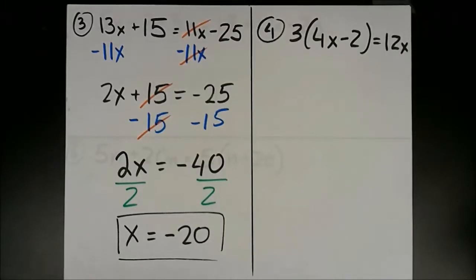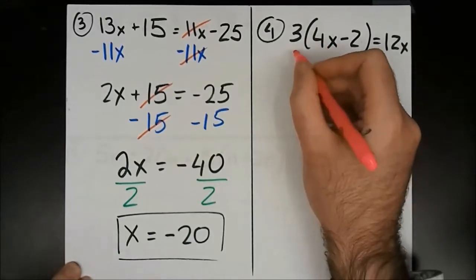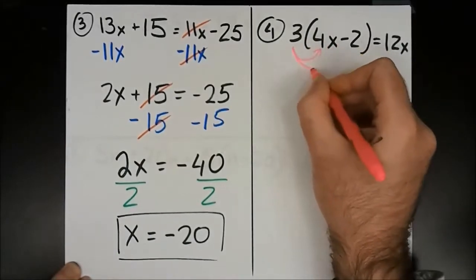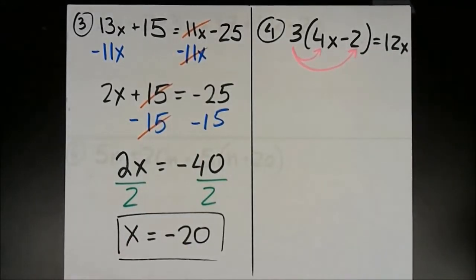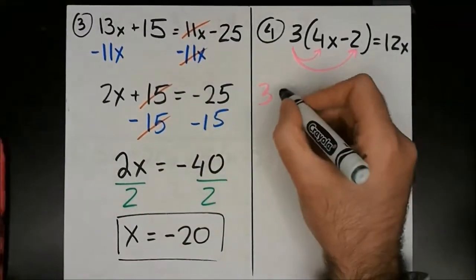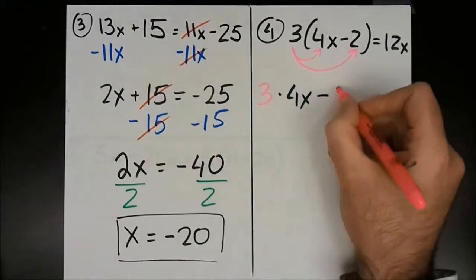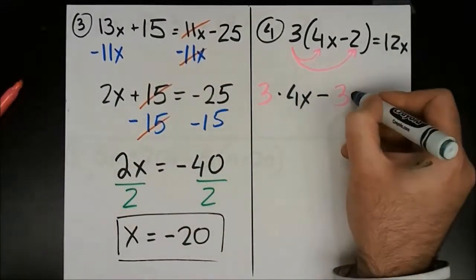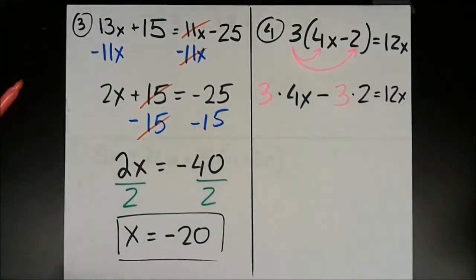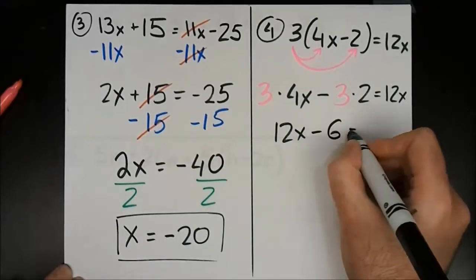With number 4, we have one tiny thing that's different: we have a parenthesis with a 3 in front of it. There's nothing I can do inside the parenthesis, so I'm going to break it down by distributing the 3 to everything inside. So I get 3 times 4x, minus 3 times 2, and all of that equals 12x. 3 times 4x is 12x, and 3 times 2 is 6, so minus 6 equals 12x.